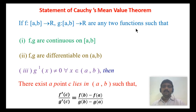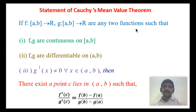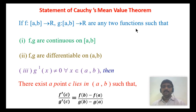In Lagrange's mean value theorem we have only one function f(x), and the formula is f'(c) equals f(b) minus f(a) divided by b minus a. But here we also have g'(c) equals g(b) minus g(a) divided by b minus a. Dividing f'(c) by g'(c), the (b minus a) terms cancel, giving f'(c) over g'(c) equals f(b) minus f(a) over g(b) minus g(a), which is the statement of Cauchy's mean value theorem.